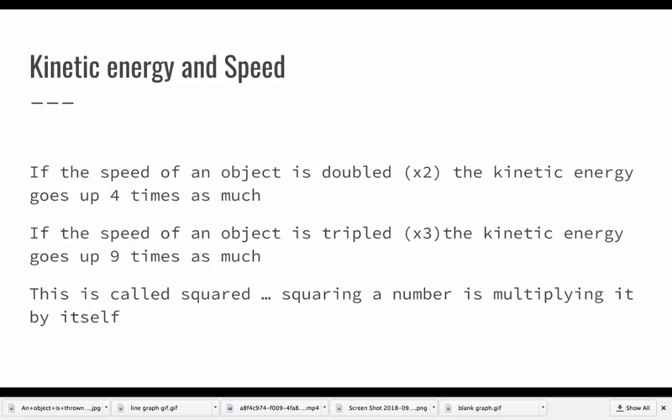And this is called something being squared. So squaring a number is just multiplying it by itself. So two squared is two times two. Three squared is three times three. Four squared, four times four.